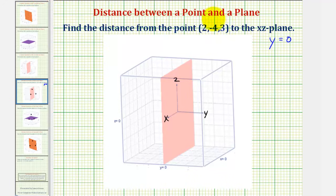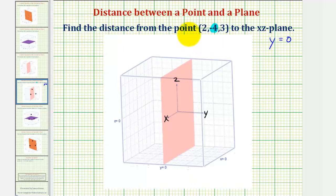Notice how here the y coordinate is negative four. A point with a y coordinate of negative four would be four units from the plane y = 0. Therefore, the distance from this point to the xz plane is four units.